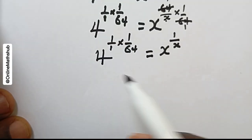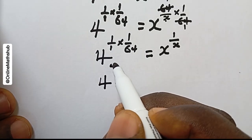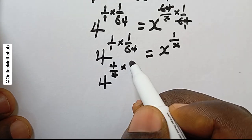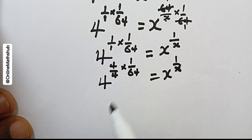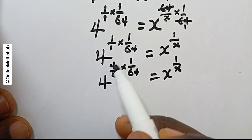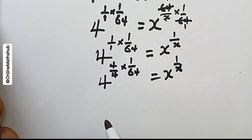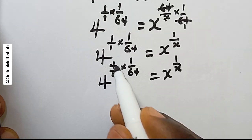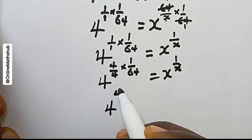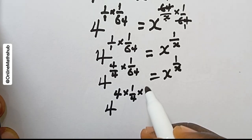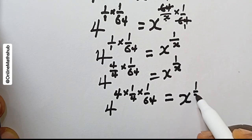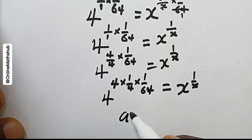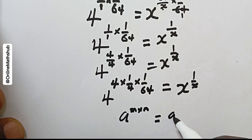So at this point I'm going to rewrite the left side. I write it as 4 divided by 4, multiplied by 1/64, which equals x^(1/x). I then write 4^4 multiplied by 1/4 multiplied by 1/64. Remember the index rule: a^(m·n) = (a^m)^n, so we can pull the exponent outside the bracket.